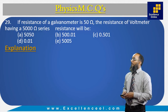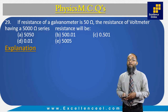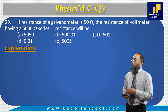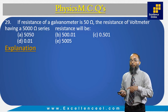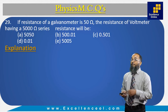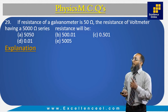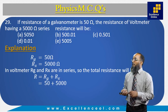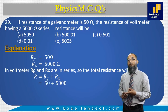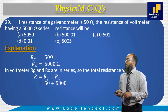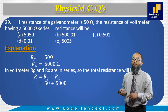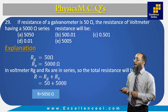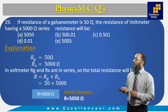If the resistance of a galvanometer is 50 ohms and a series resistance of 5000 ohms is connected to convert it into a voltmeter, the total resistance is R_total = R_g + R_x = 50 + 5000 = 5050 ohms. The correct answer is 5050 ohms.